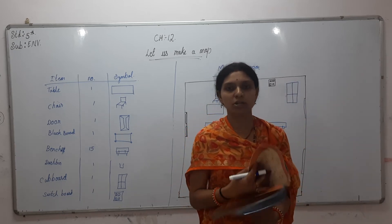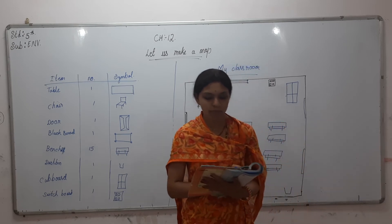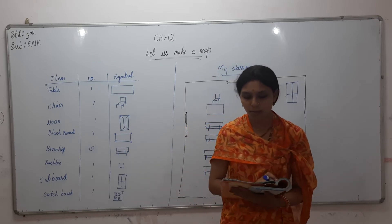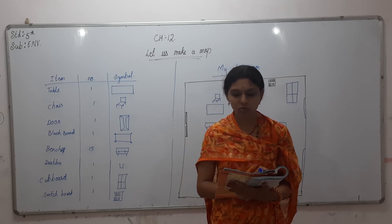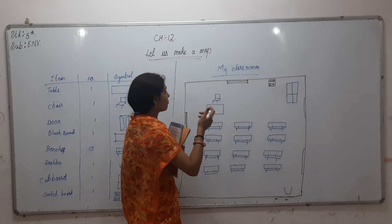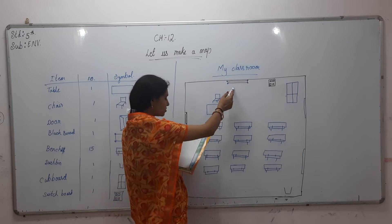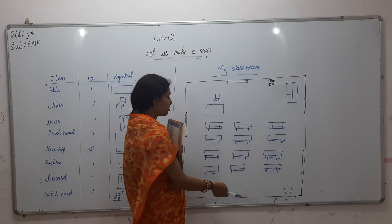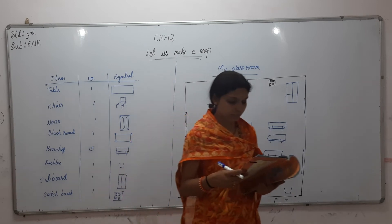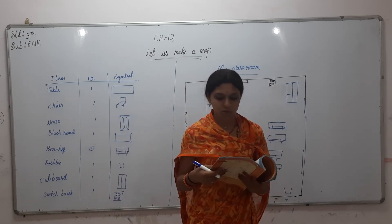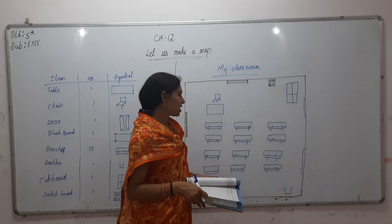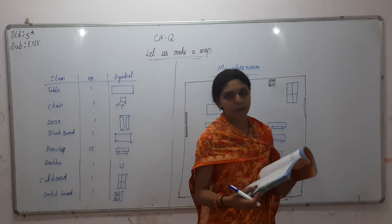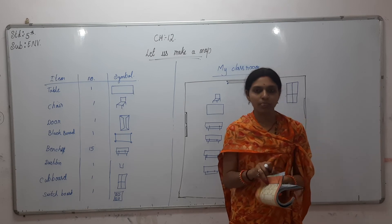Now page number 95. Make a map of your school. Whatever is in front of us should be shown on the upper side, and whatever is behind us should be shown on the lower side of the map. Whatever is on the sides is to be shown on the left and right side. Now you have to draw your school's map.